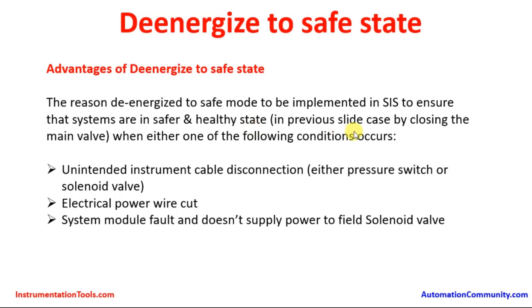In the previous slide case, the main valve closes when either one of the following conditions occurs. Whenever there is an unintended instrument cable disconnection — either at the pressure switch or the solenoid valve — the pressure switch works as a sensor and the solenoid valve is the final control element output. If there is a cable disconnection in any one of these, it loses the signal going to the logic solver and the output to the solenoid valve gets disconnected, thereby removing power and moving the valve to the closed position.